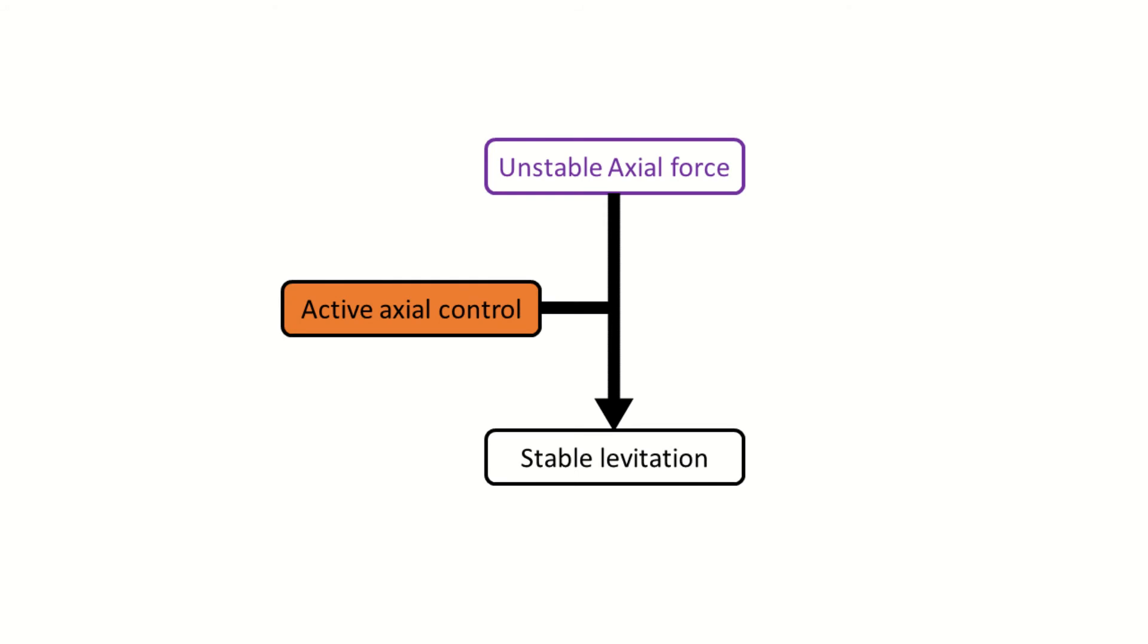By regulating the stator current, it is possible to generate a suspension force that pushes the rotor back to the center, compensating the unstable force by the permanent magnet radial bearings. The same currents can be used to generate motor torque.